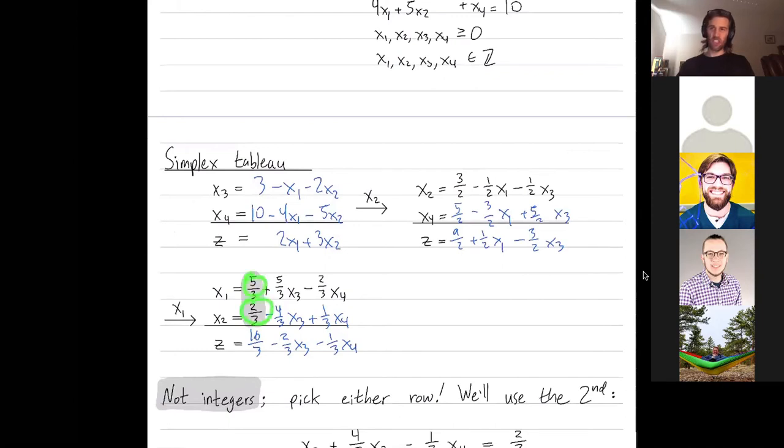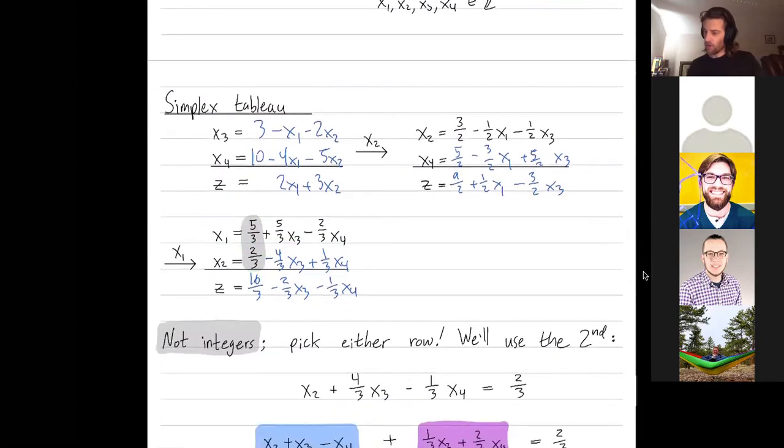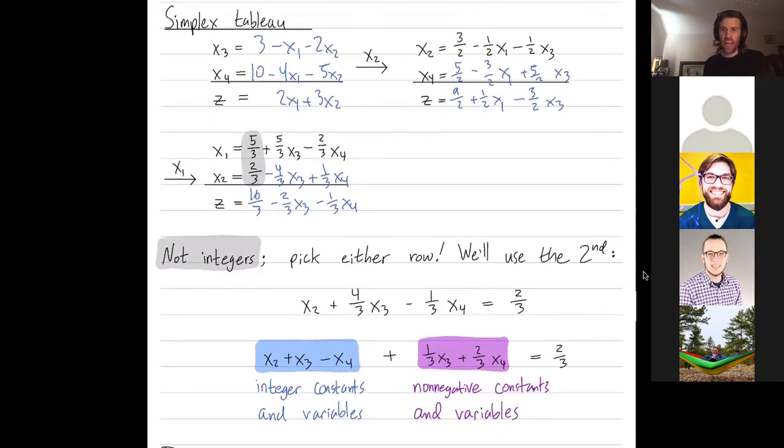So whenever you have a non-integer component in your solution, you can do the Gomory cut. You could do the Gomory cut on either of these. You could do it on both of these. We're just going to do the Gomory cut on one of them. So we'll do the Gomory cut on the second row, which is possible because 2 thirds here, which x2 is currently equal to, is not an integer. So write out the equation from that row, and put the constant on its side by itself. So x2 plus 4x3 minus 1 third x4 is equal to 2 thirds. Now we're going to take the left-hand side and write it as a sum of two portions. The first portion is called the integer portion, and the second portion is called the non-negative portion.